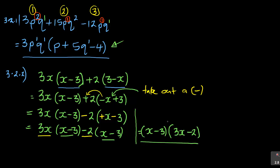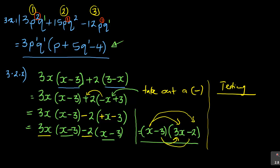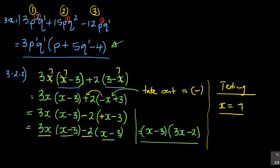Now whatever is inside the brackets is matching. When you've done that, the answer is already done. You write the first bracket, which is (x − 3), and then write what is outside the bracket: open another bracket with 3x − 2. So the final answer is (x − 3)(3x − 2). To test your answer, choose any value of x — for example, let x = 7. Substitute 7 everywhere x appears in the original expression.